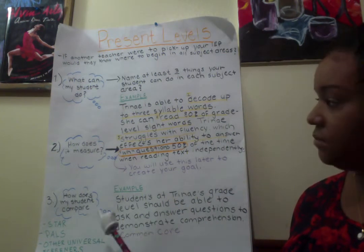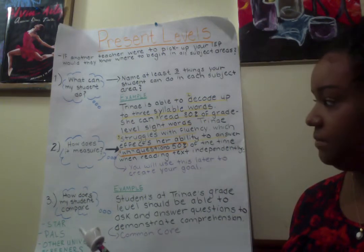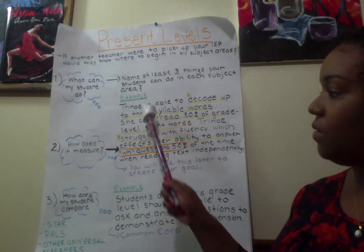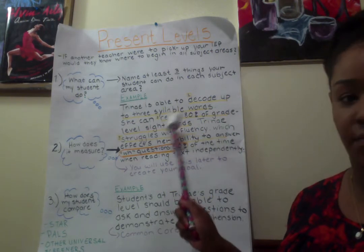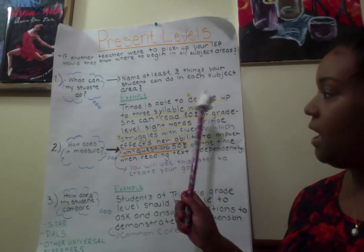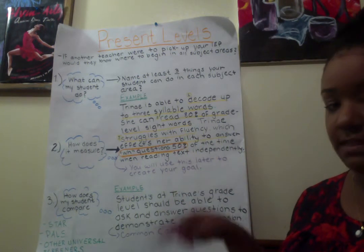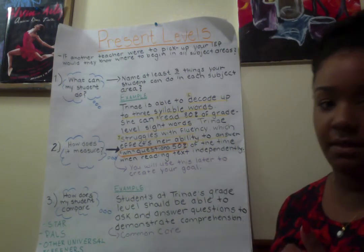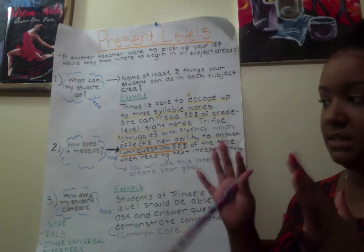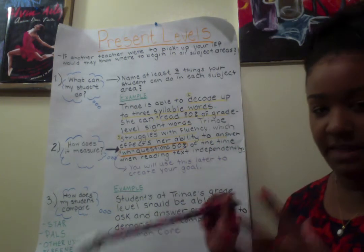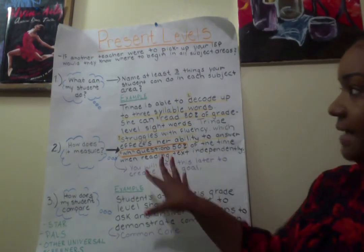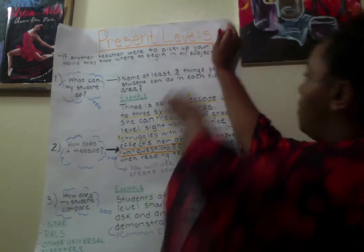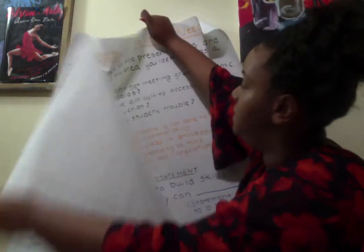I'm continuously comparing how my student is doing compared to other grade-level students within the district. Those are your present levels. I personally recommend working through one subject matter at a time. If I'm focusing on reading, I'll go through reading, writing, math, and behavior skills, but I'll focus on those main areas — present levels, disability related need, and goal — for one subject at a time so you can maintain that continuity. Now that I've identified Trinae's present levels, I can move to her disability related need.